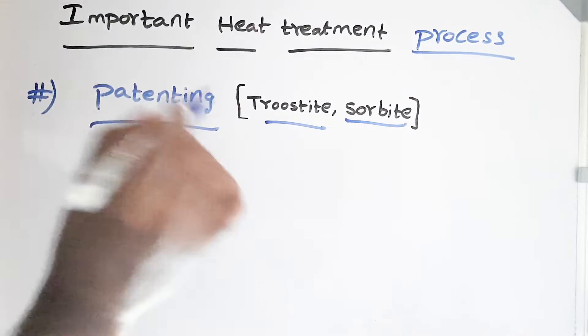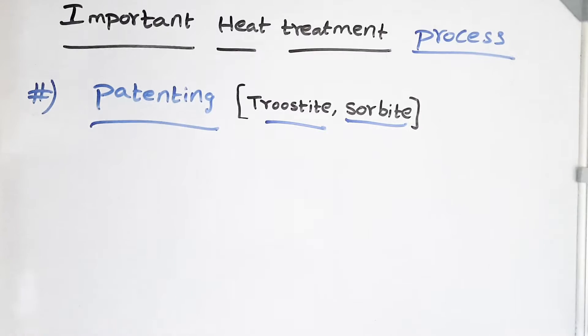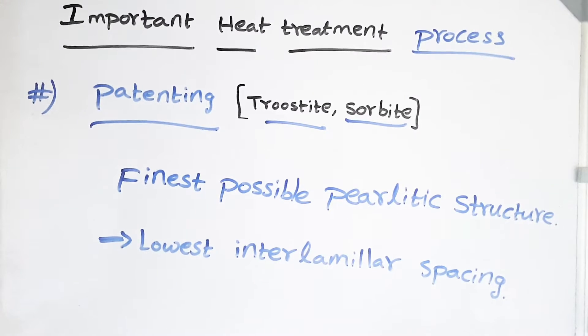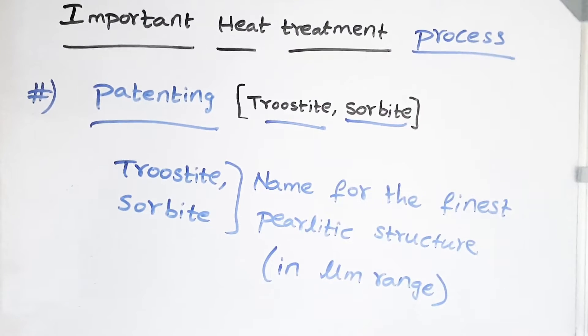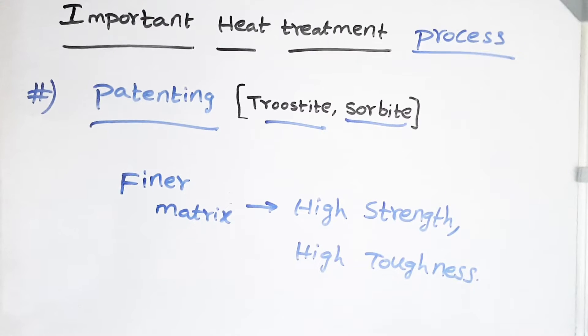And what are these? These are the finest possible pearlitic structure with the lowest interlamellar spacing. Troostite and sorbite are the names given for the structure with finest pearlitic structure. The interlamellar spacing is of the order of micrometers here. These structures give highest strength and toughness for that same composition. High toughness because a lot of obstacles for the crack growth and propagation.